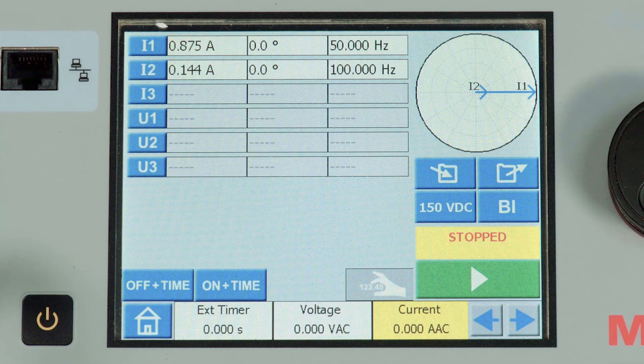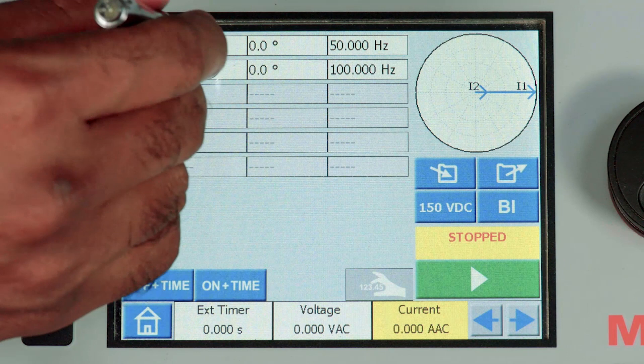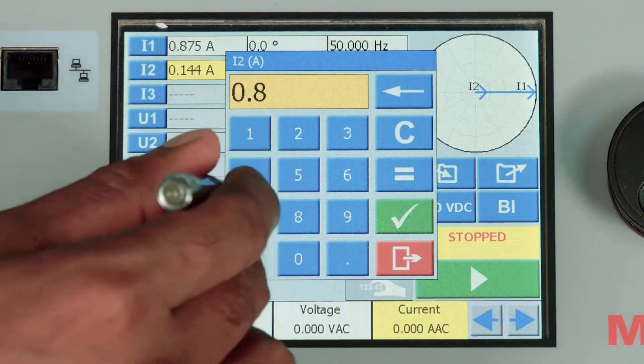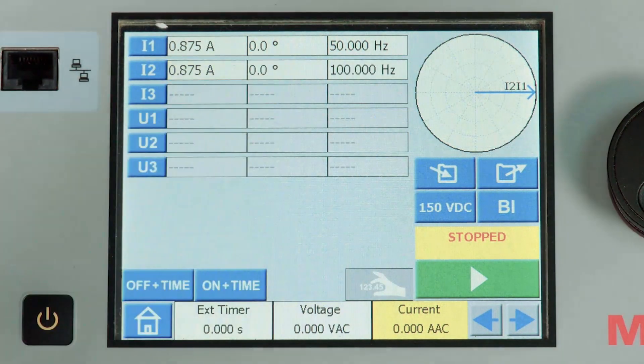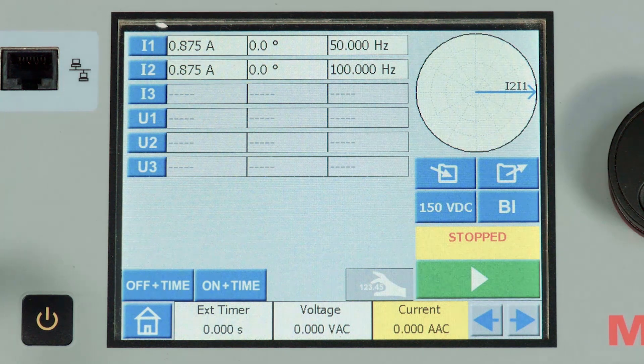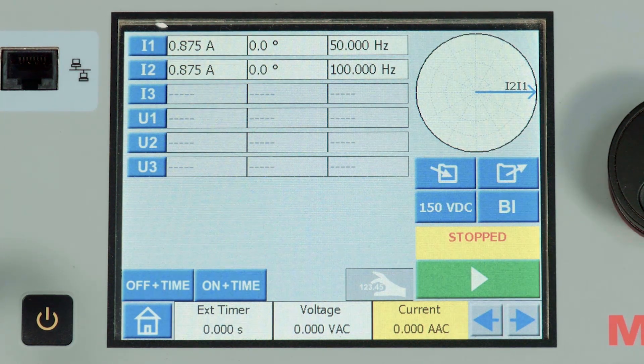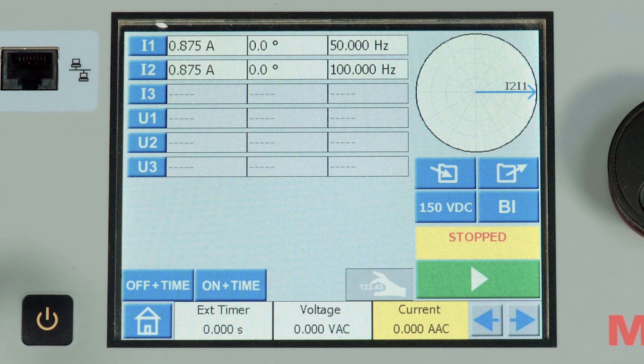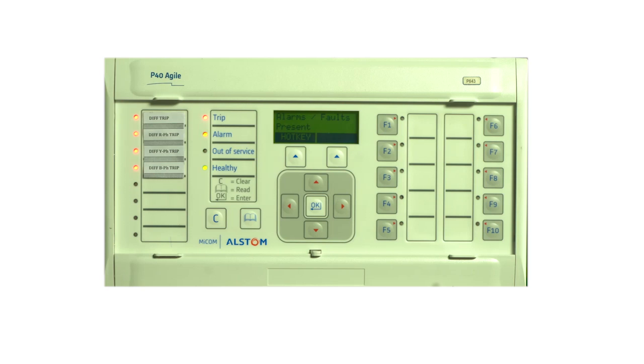Let us verify the non-operate-to-operate method. In this method, we will inject 0.875A at 50Hz in CT1 and 0.875A at 100Hz in CT2. The relay should pick up in differential. However, the tripping should not be executed.